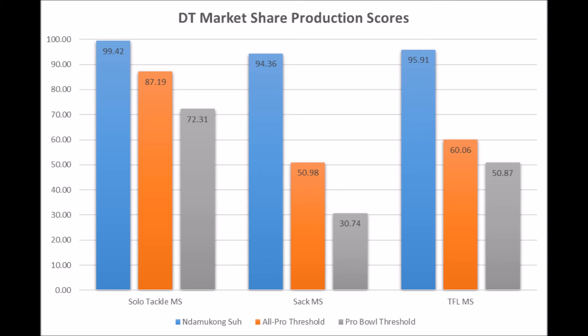There's a ton of defensive tackles that looked kind of like Suh. Jonathan Allen from Alabama looked kind of like Suh at times, but he didn't test like Suh as an athlete and he didn't produce like Suh — he didn't produce at that level. So production data and production traits in general are a good way to temper your expectations about a prospect, so you don't fall too hard for someone.